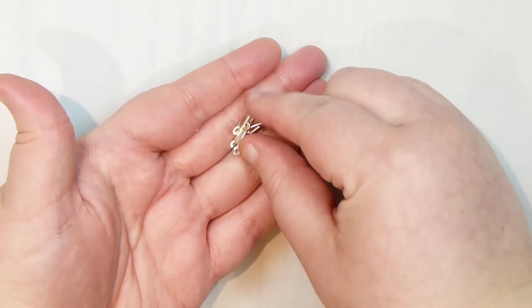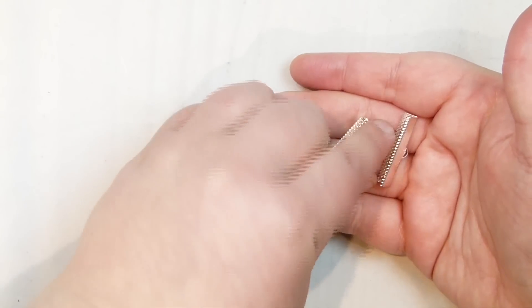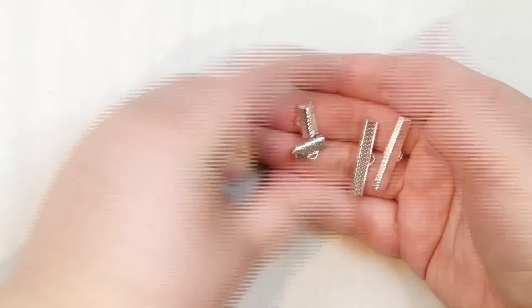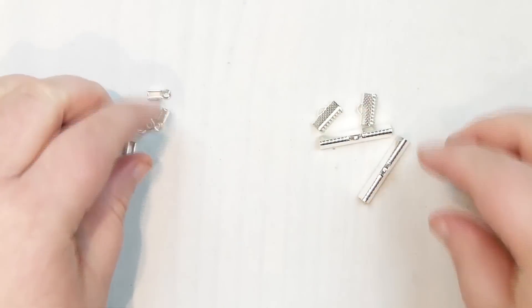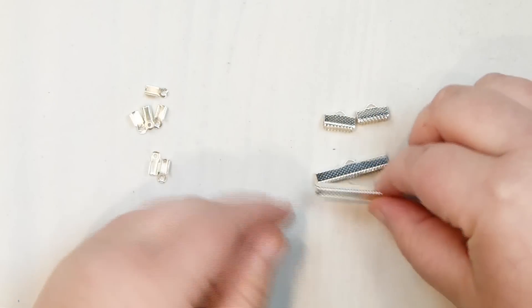These are cord ends and that's what they look like. And then also ribbon ends. So these two I do really like using to finish off macrame quite regularly. I think it gives a really nice professional finish.